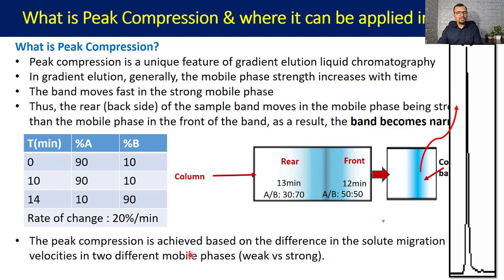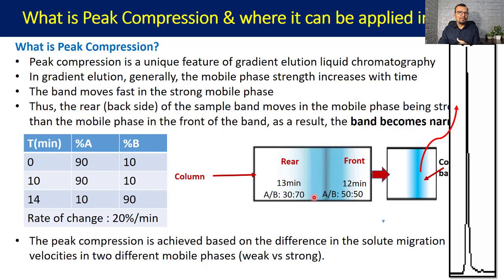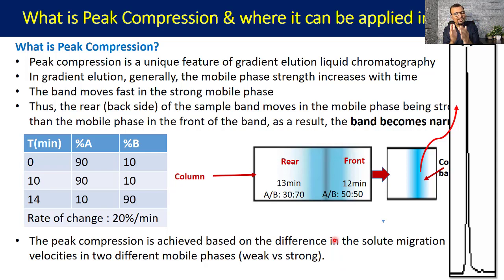Peak compression is achieved based on the difference in solute migration velocities in two different mobile phases — weak versus strong. There is a weaker mobile phase at the front of the peak and a stronger mobile phase at the rear side of the peak. The solute has different velocities in these two mobile phases: in the weak mobile phase you have slower migration, and in the stronger mobile phase you have higher migration speed of the band.